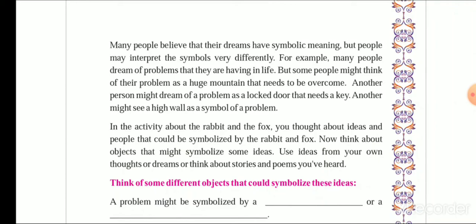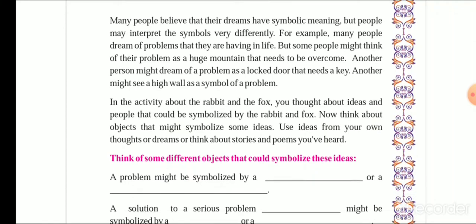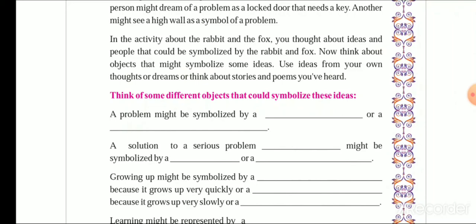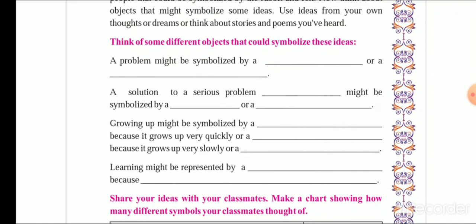Another person might see a high wall as a symbol of a problem. In the activity about rabbit and fox, you thought about ideas and people that could be symbolized by the rabbit and fox. Now you will also think about objects and things that symbolize ideas. A problem might be symbolized by a blank, and a solution to a serious problem might also be symbolized by something.